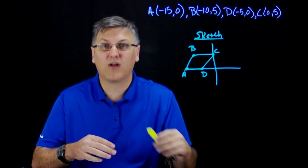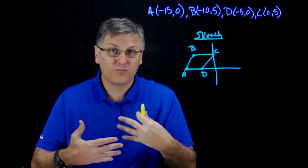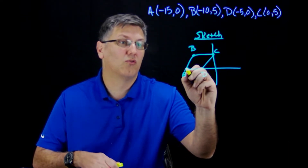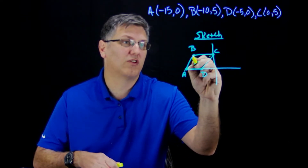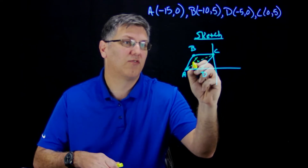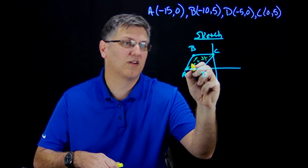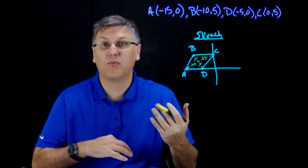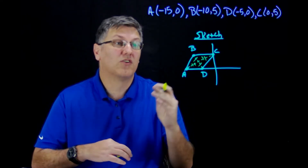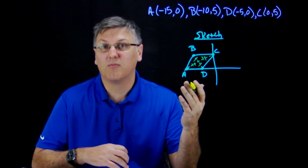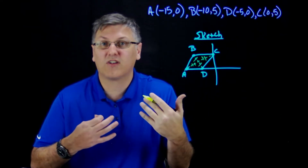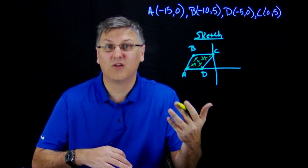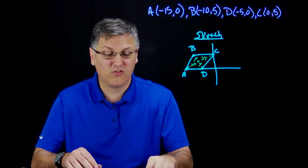What we're going to do is test whether the diagonals bisect each other. If this length and this length are the same, and this length and this length are the same, we can say it's a parallelogram. The trick is that if the diagonals bisect each other, they must intersect at the exact same midpoint. So we're going to use the midpoint formula.